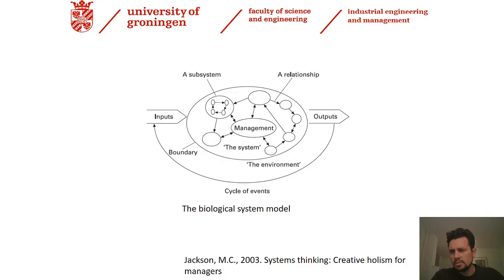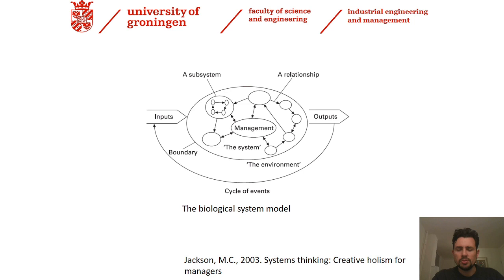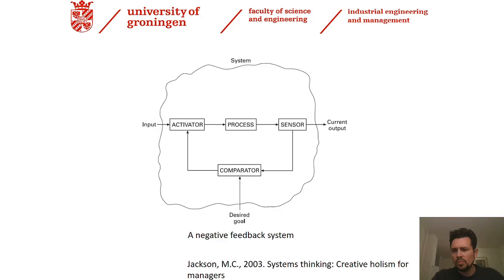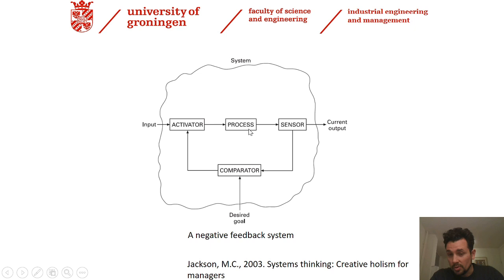Jackson also provides a second example in terms of biological system models, where we can even have control engineering applied to biological system models, including management, subsystems, boundaries, inputs, outputs, and lots of relationships also connected to the environment. Finally, we can also see the negative feedback system applied to different engineering fields — an input and an output, the boundary, the desired goal, the activator, process and sensor. This can represent a production line, a robot, or a hydroelectric power plant.